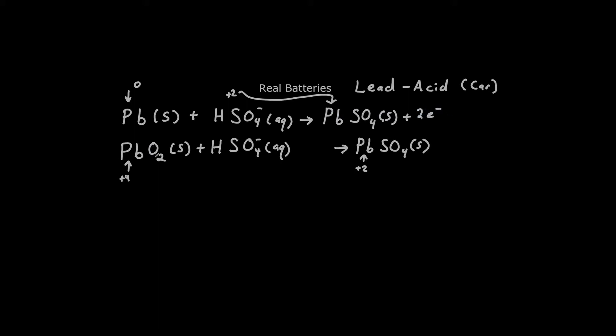If we look at the bottom reaction, we had lead four, and we went to lead two, so it looks like we gained two electrons. Let's put that two electrons. So we can see that we have our anode on the top reaction and our cathode reaction on the bottom.